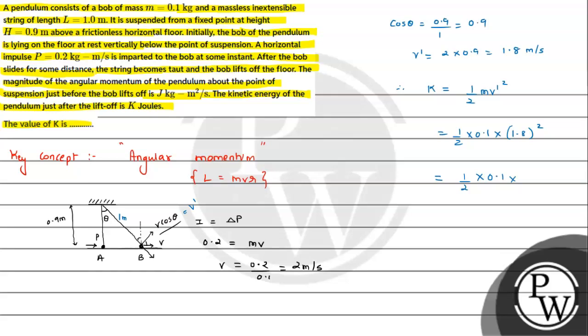So when we simplify, half into 0.1 into 1.8 squared comes out to be 3.24, and here we have 0.324 divided by 2. So finally we can see the K value is coming out to be 0.162 or 0.16 joules. So 0.16 joules will be the answer for this question. I hope you understood the solution, all the best.